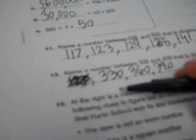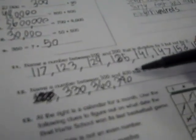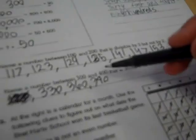Good job. So 330 would be a good number, and 360 and 390 will also be good numbers. We're almost wrapping this up. This is really great. At the right is a calendar for the month. Use the following clues to figure out what date the Bret Hart school won its last basketball game.